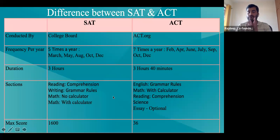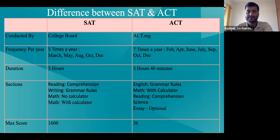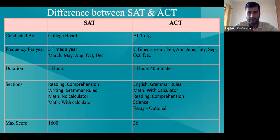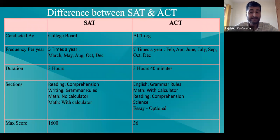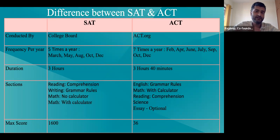Now let's look at the differences between the two exams. SAT is conducted by an organization called College Board, while ACT is conducted by ACT.org. SAT happens five times a year — March, May, August, October, and December. ACT happens seven times a year — February, June, July, September, October, and December. ACT is more frequent because SAT is a pen and paper test, whereas ACT is an online test. So as of today, SAT is an offline test where you go to a particular school to write it, while ACT is online but you still go to a center and write it on their system.